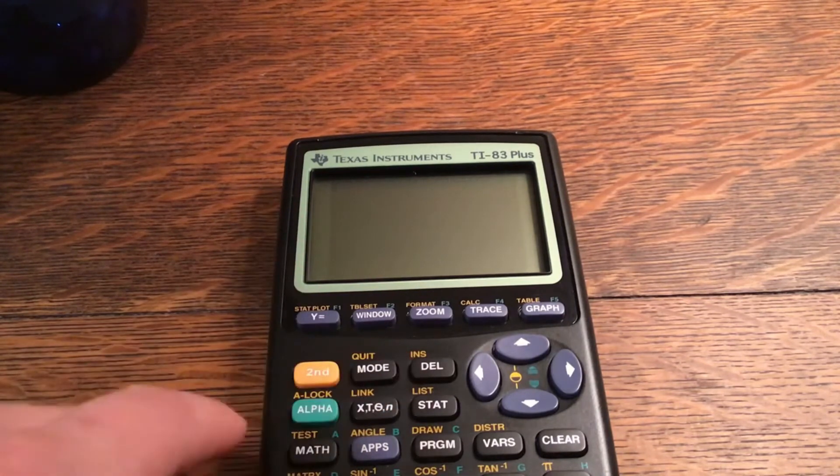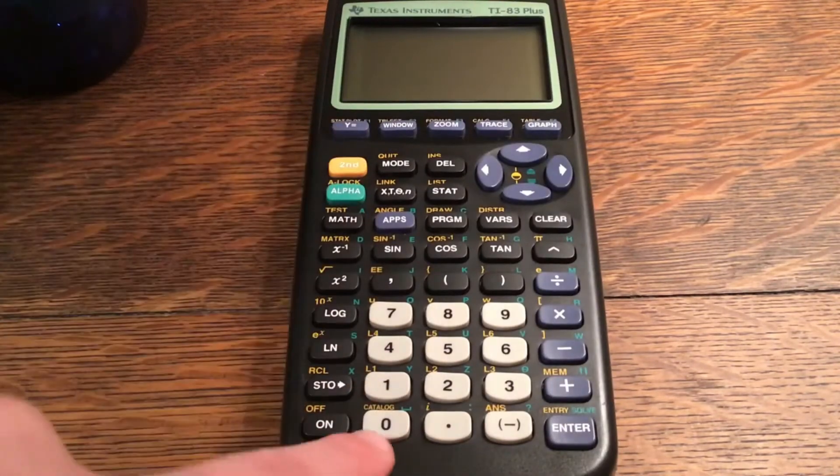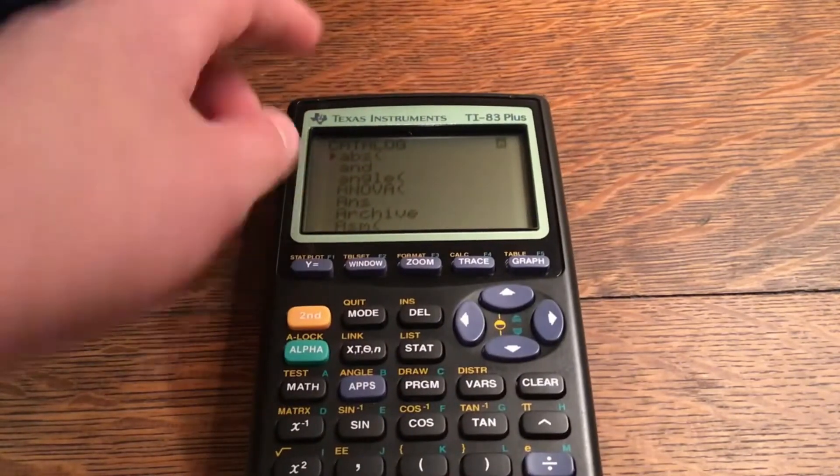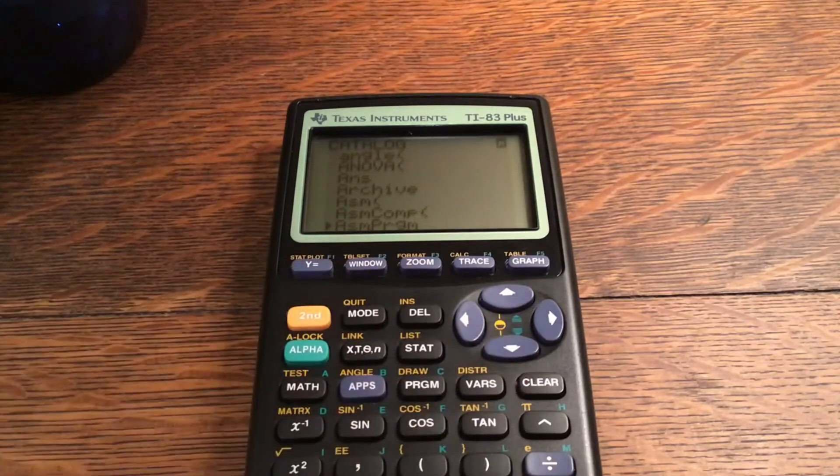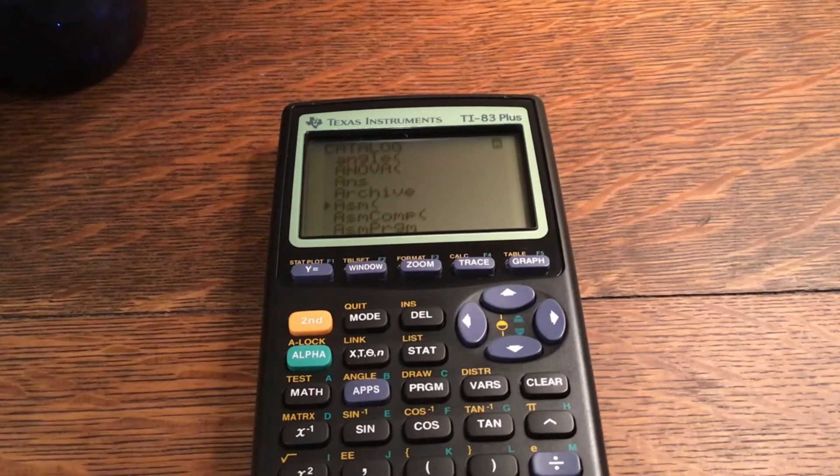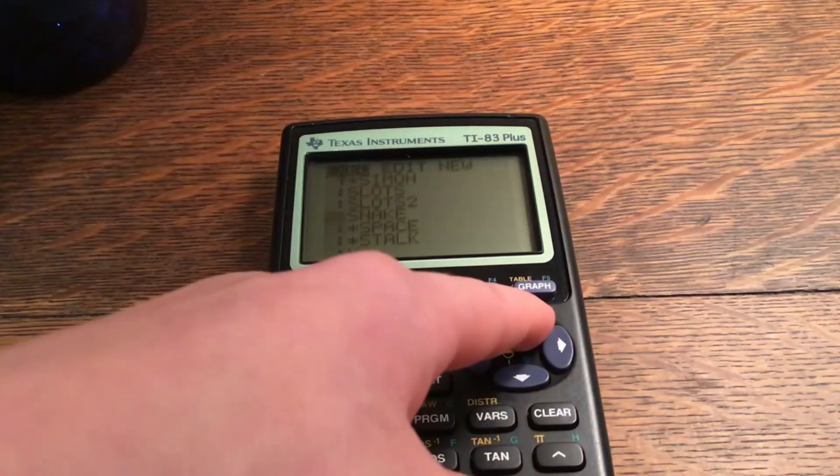Now to run the program, what you have to do is click second zero or catalog, and then scroll down until you find ASM—not ASM program. Then you click enter, and you can run your program. I called it lower, so I go over to execute and select program lower.